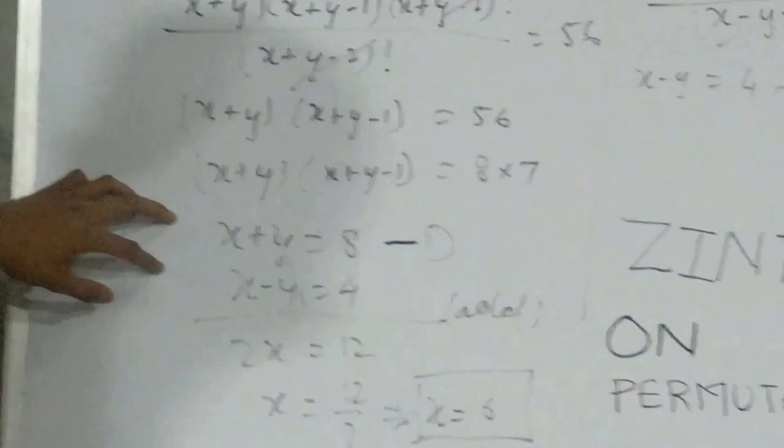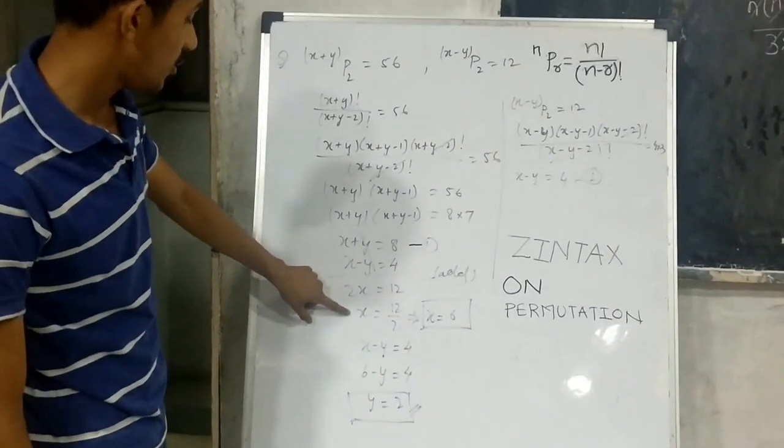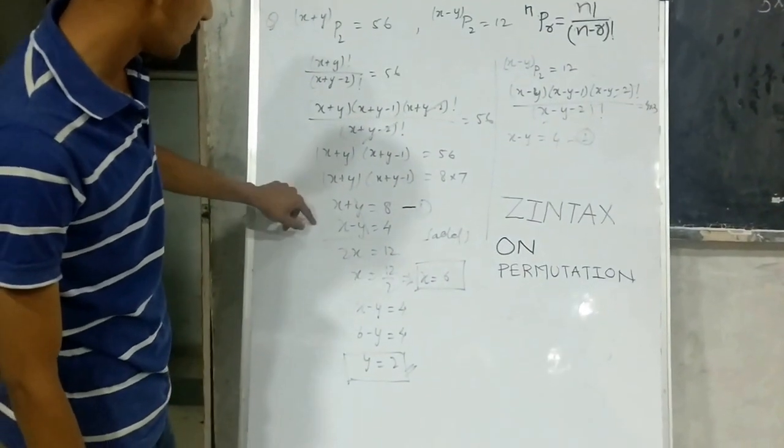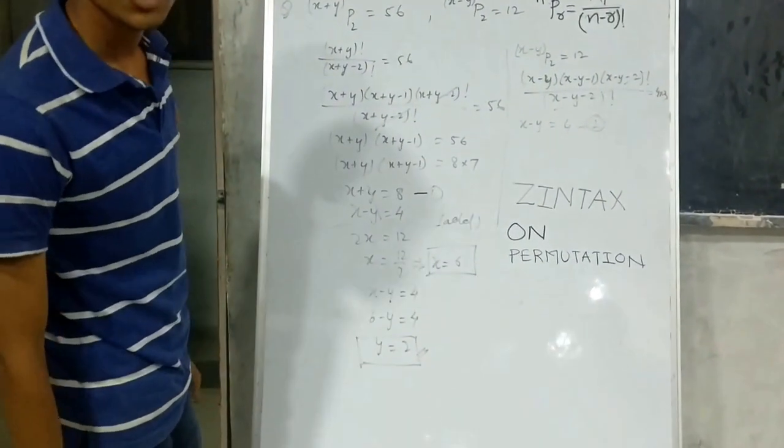So we will solve them simultaneously and we will get the value of x as 6. And then after putting the value of x in equation 1 we get the value of y is equal to 2.